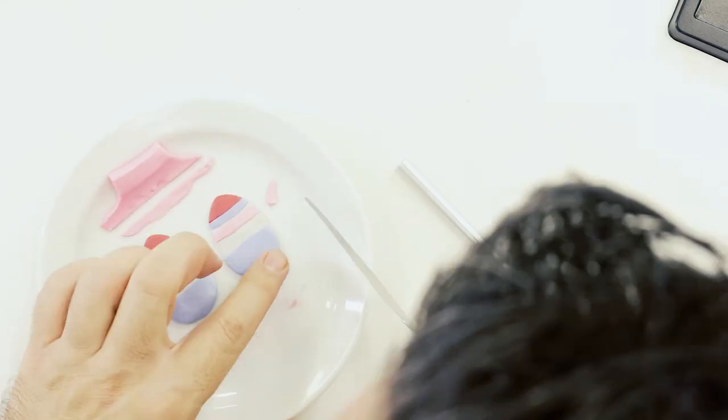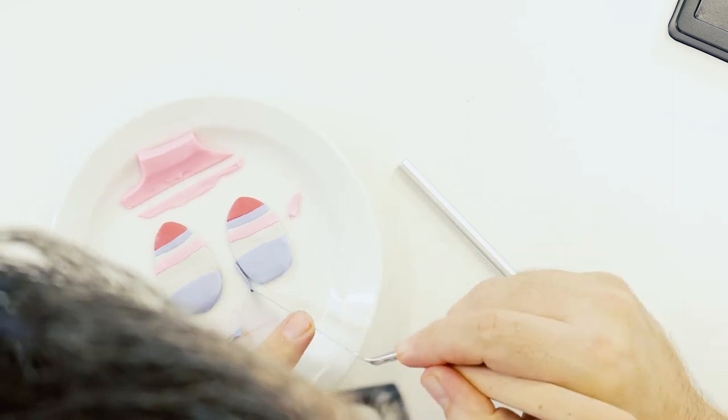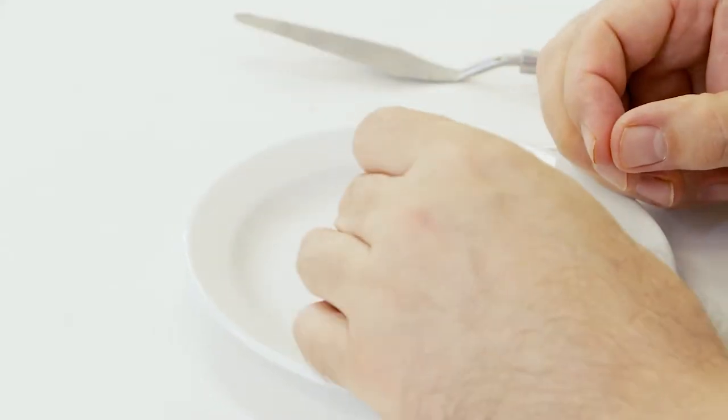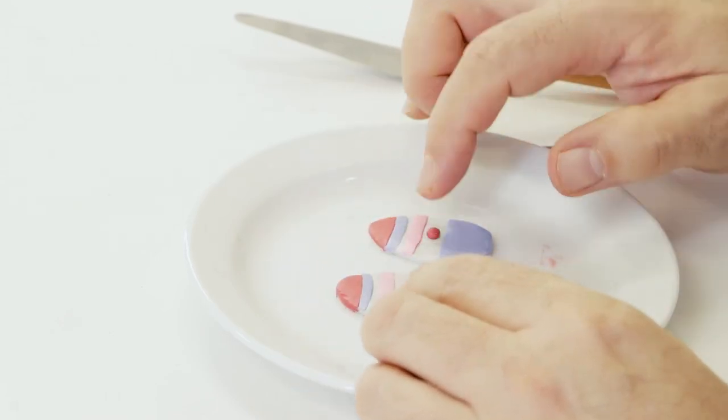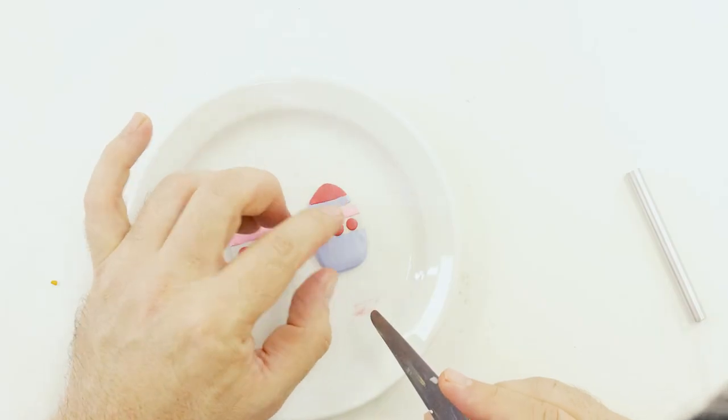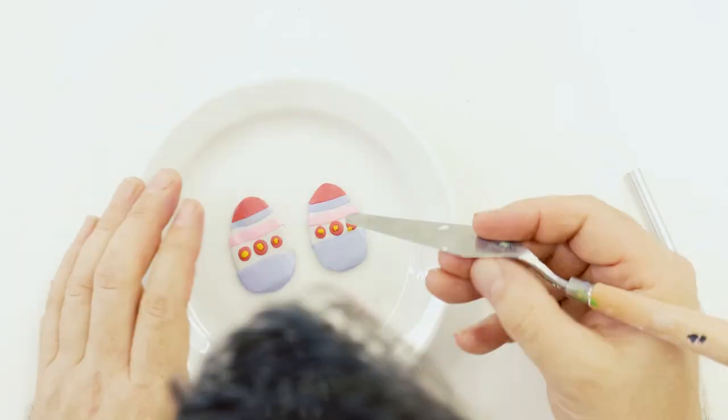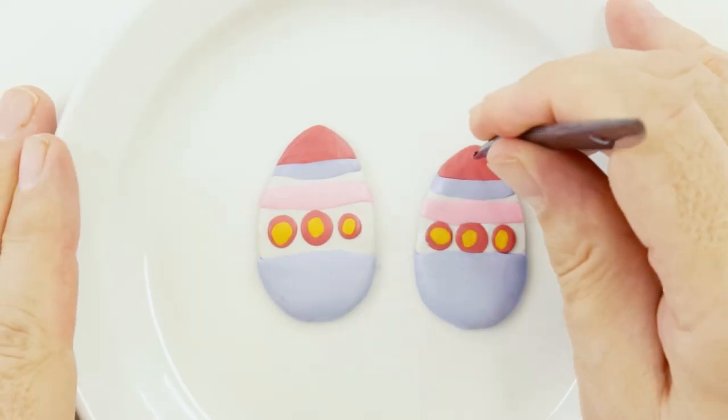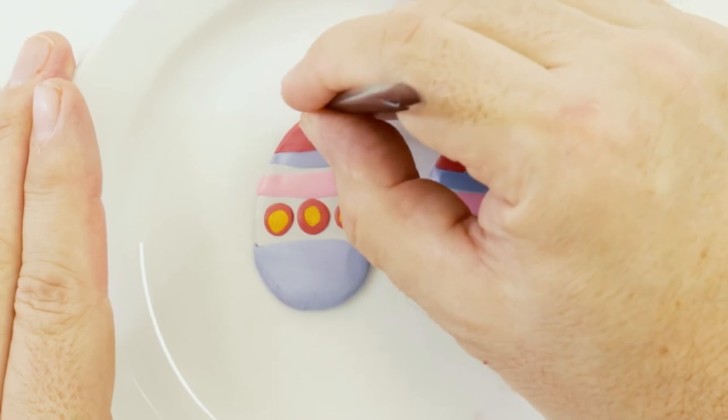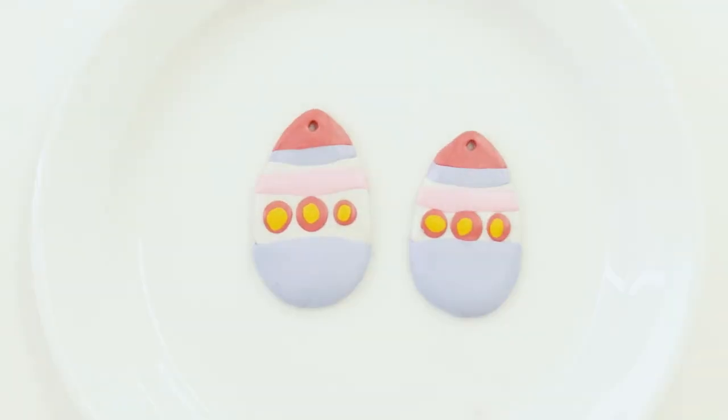To create some spots I roll a very thin sausage out of metallic red and cut six tiny sections and lay three in between the pink band and the blue base colour and squash them so they become circular shapes. I then fill the inside of each red circle with gold, create a hole for each hoop and bake it at 130 degrees celsius for 30 minutes.